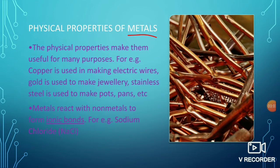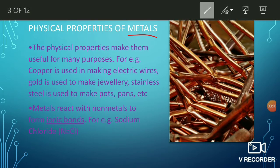For example, copper is used to make electric wire, gold is used to make jewelry, and stainless steel is used to make pots, pans, etc.